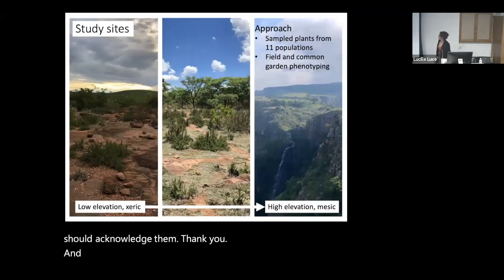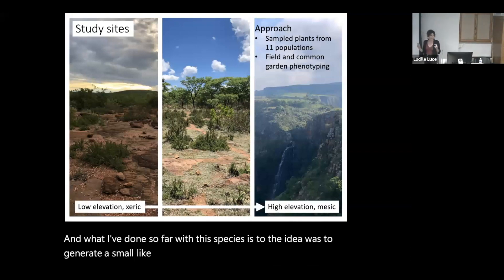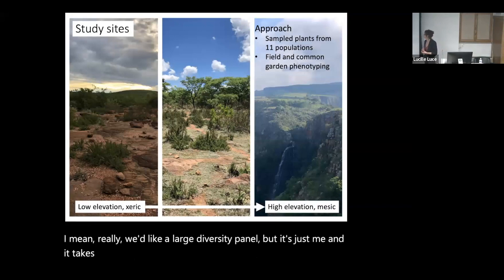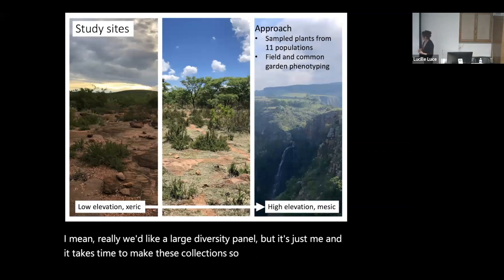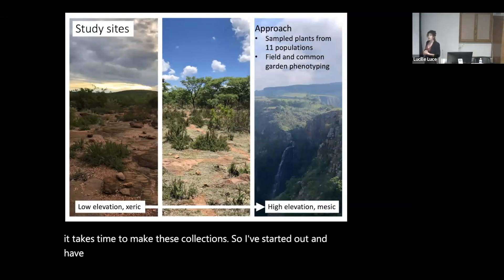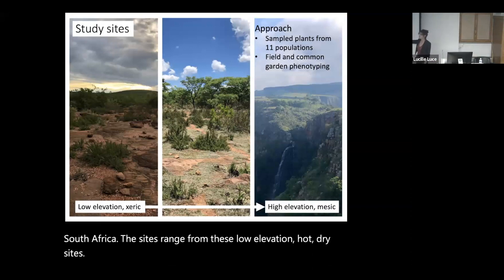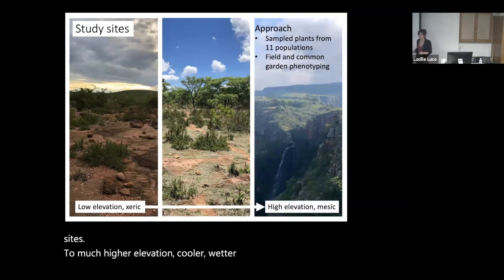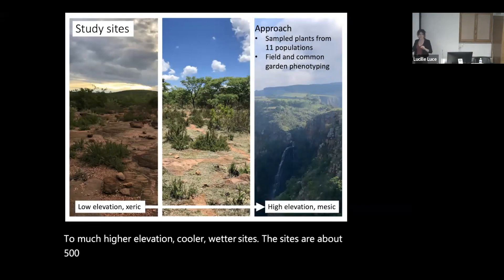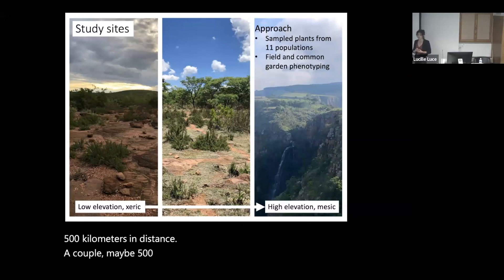What I've done so far is generate a mini diversity panel. I've sampled 11 populations across an environmental gradient in South Africa. The sites range from low-elevation, hot-dry sites to much higher-elevation, cooler, wetter sites — about 500 kilometers in distance, maybe 500 meters in elevation, and with significant differences in rainfall. We collected plants from all of these sites and phenotyped them both in the field and as progeny in a common environment.